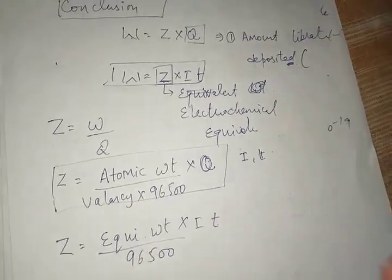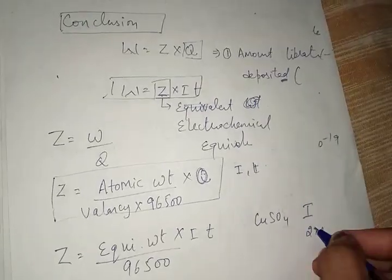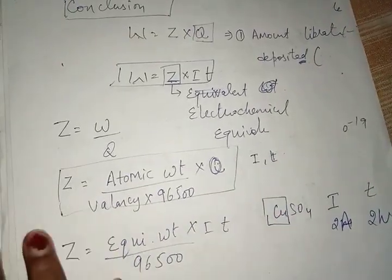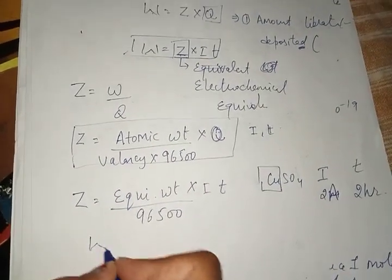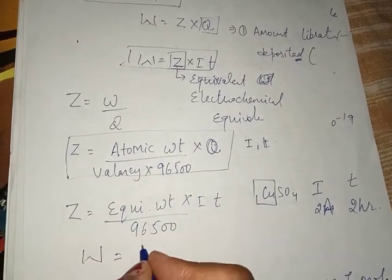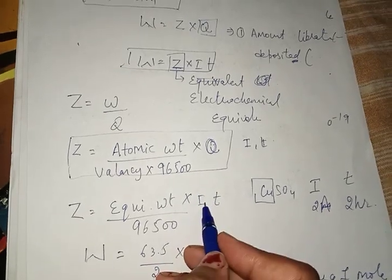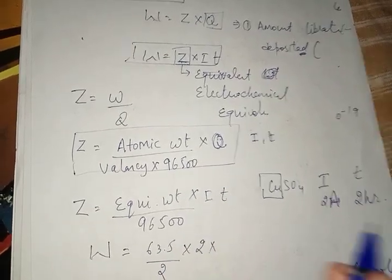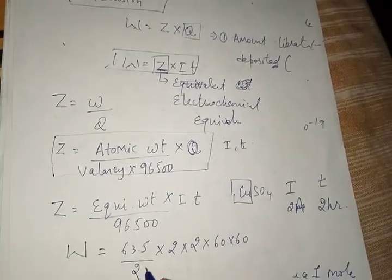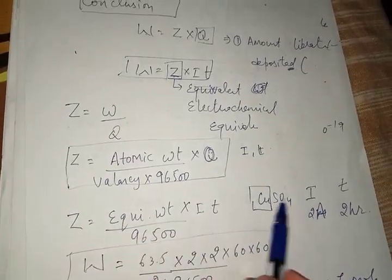For example: a copper sulfate solution has a current of 2 amperes passed through it for 2 hours. How much copper is deposited? Copper's atomic weight is 63.5 and valency is 2. Time must be converted to seconds: 2 hours = 7200 seconds. So W = (63.5 ÷ 2 ÷ 96500) × 2 × 7200. Z for copper equals approximately 0.0003295 grams per coulomb.